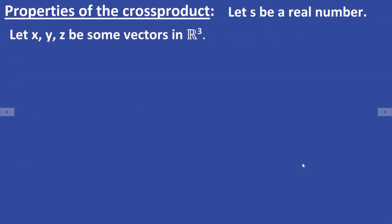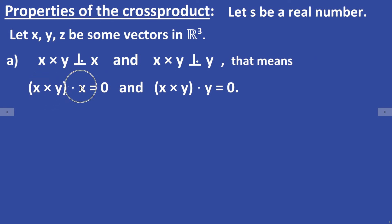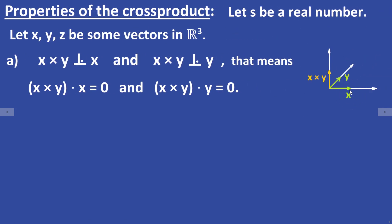Now let's look at some basic properties of the cross product. Let S be a real number and let X, Y, Z be vectors in R3. The most important property: the cross product of X and Y is orthogonal to both X and Y. That means (X × Y)·X = 0 and (X × Y)·Y = 0. For example, if X and Y look like that, the cross product is orthogonal to both X and Y.